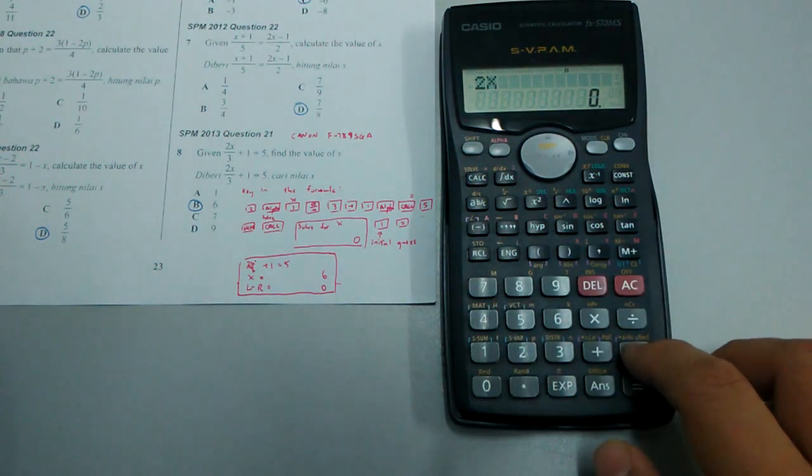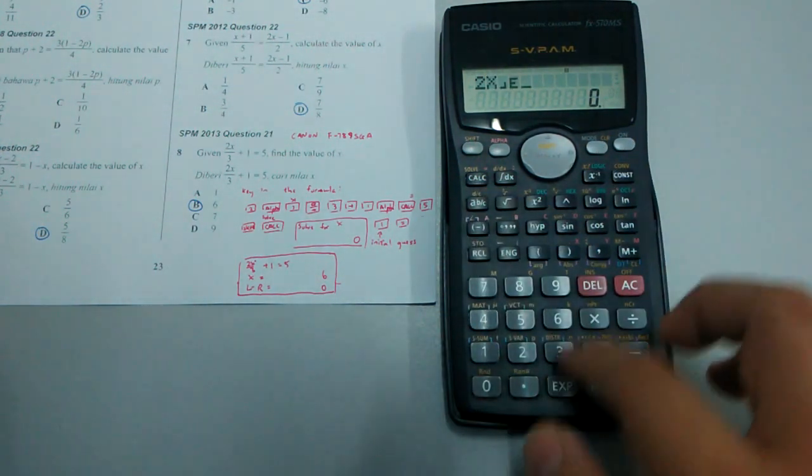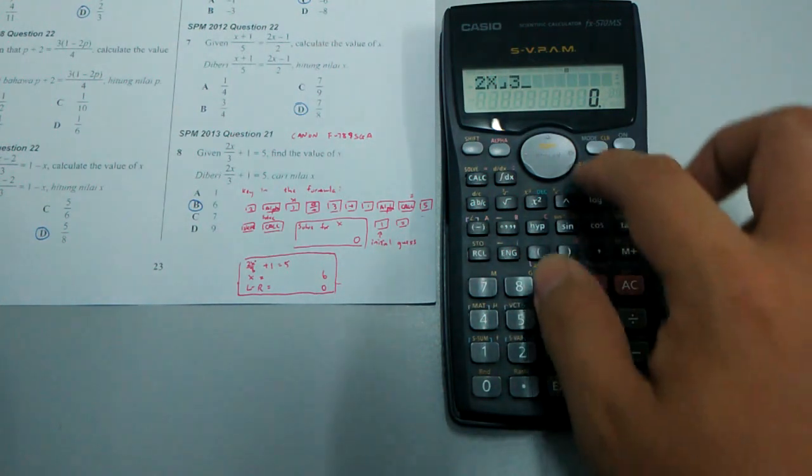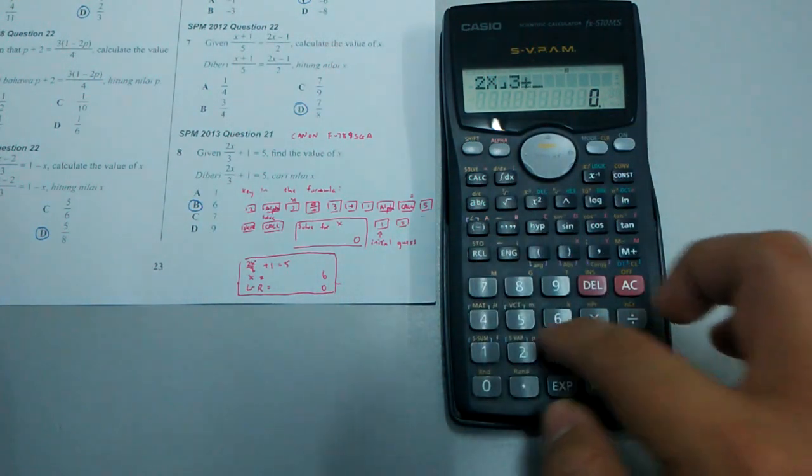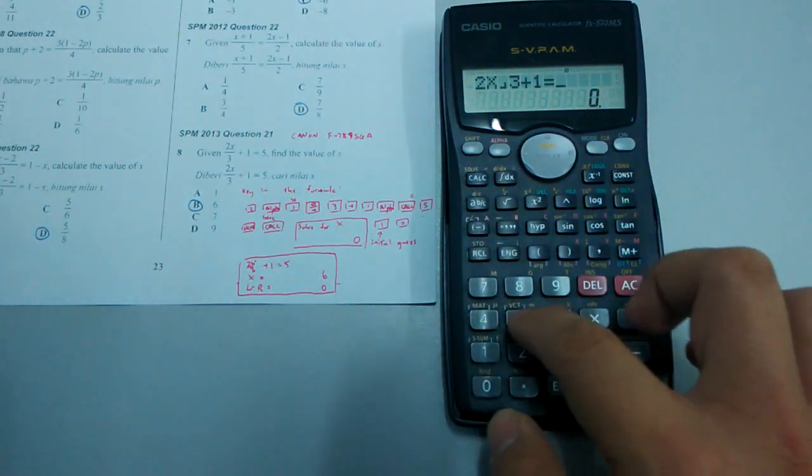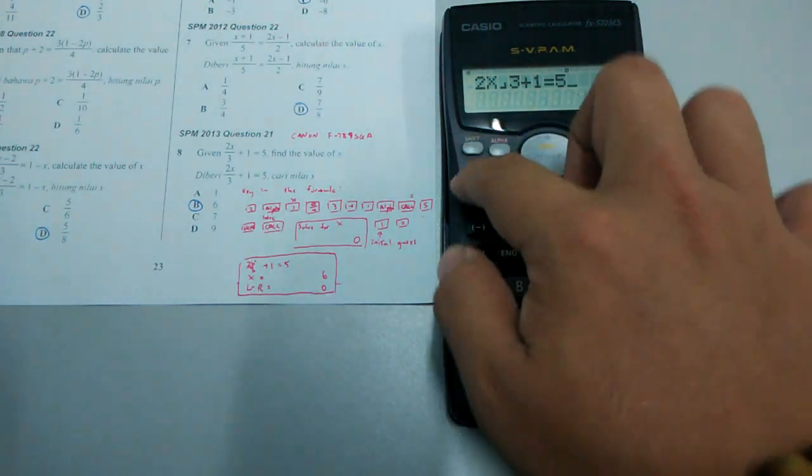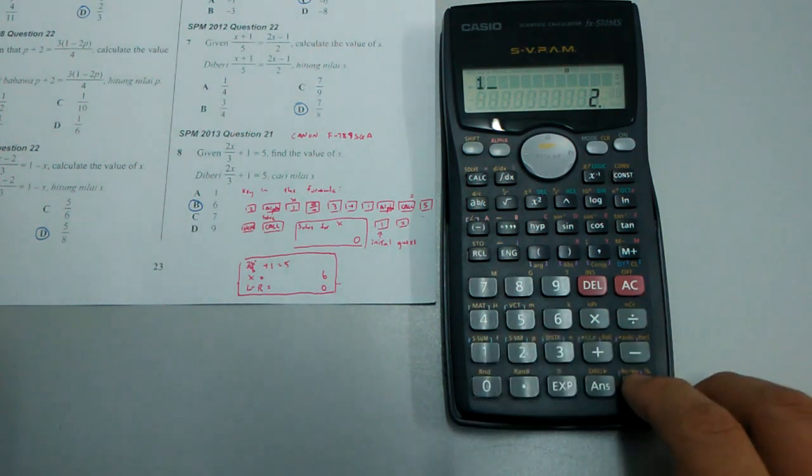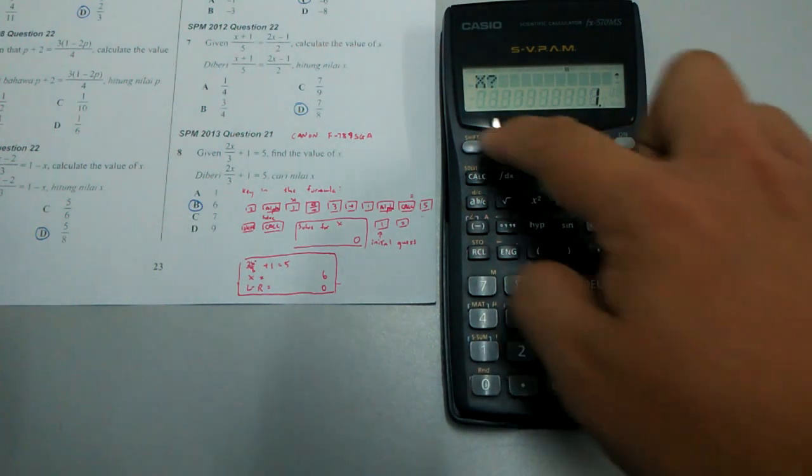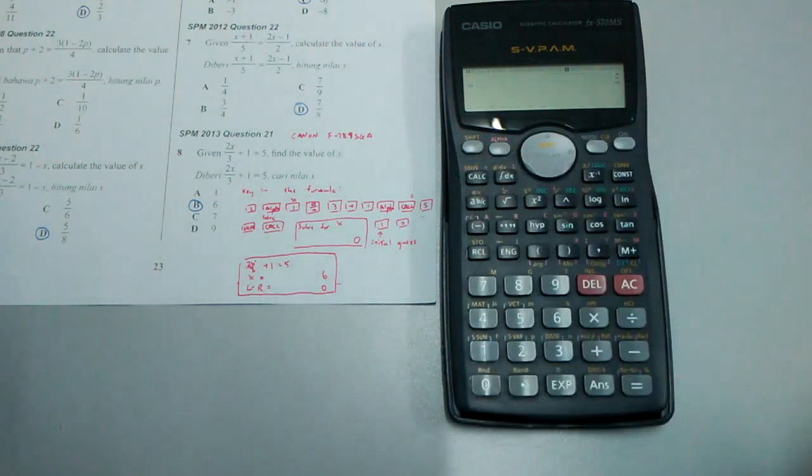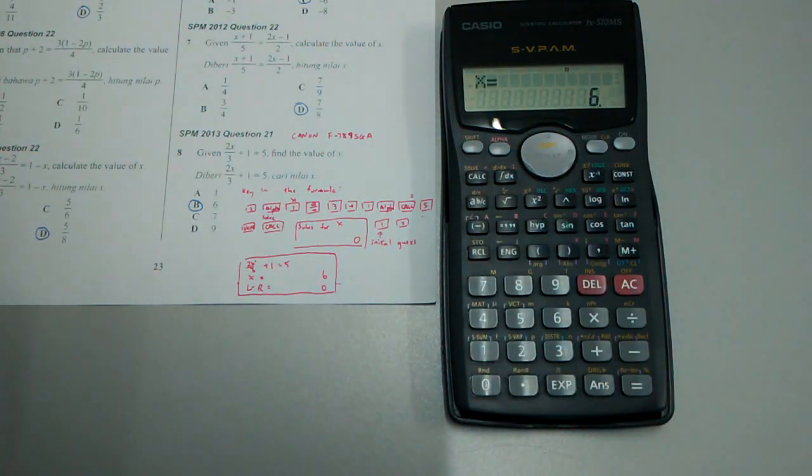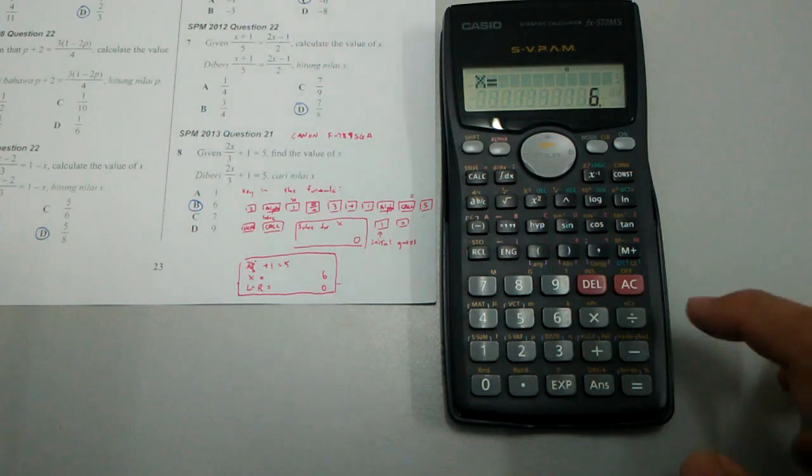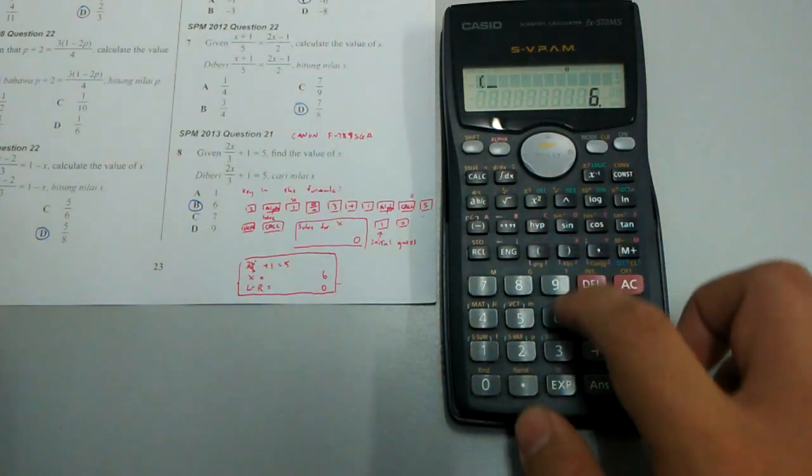X is 1, then I press shift solve and the calculator returns 6. I try a more complicated example: (x+1)/5 = (2x-1)/2. I enter the equation, shift solve with initial guess 1.